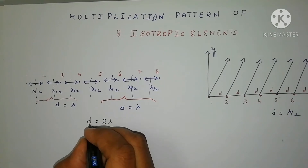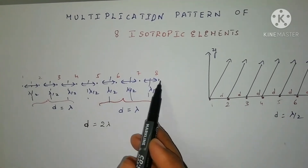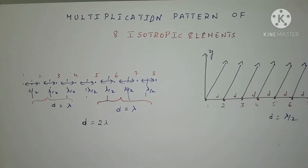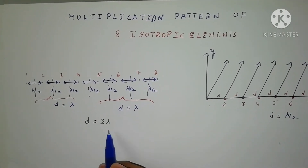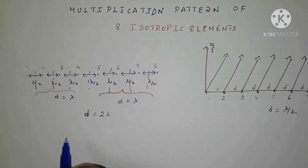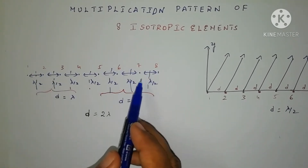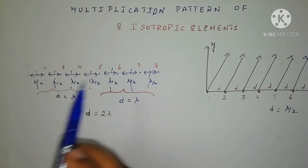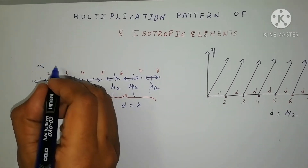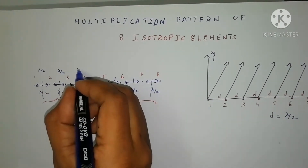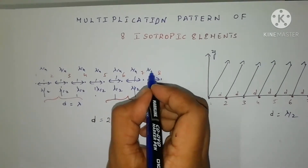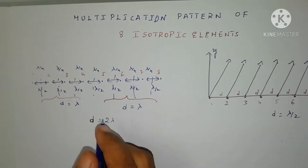This 2 lambda is the total spacing when we consider the eight isotropic element sources. Now this D equal to 2 lambda will be our group pattern spacing. For this I need to calculate the radiation pattern, so we will refer back to our formula. The main important thing you have to understand is how to reduce this unit — each element we can reduce to lambda by 4, lambda by 4, lambda by 4, lambda by 4, and if you sum up all these things again you will get the same answer.